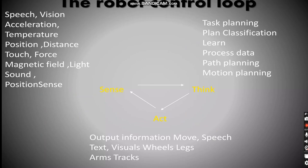The robot control loop: speech, vision, acceleration, temperature, position. As you can see, sense, act, think.